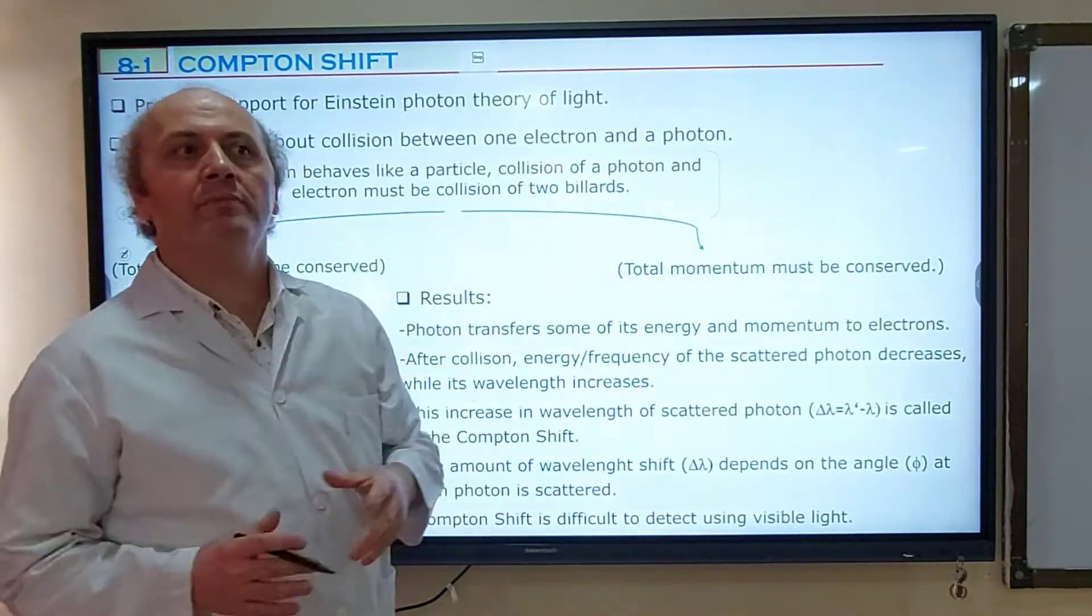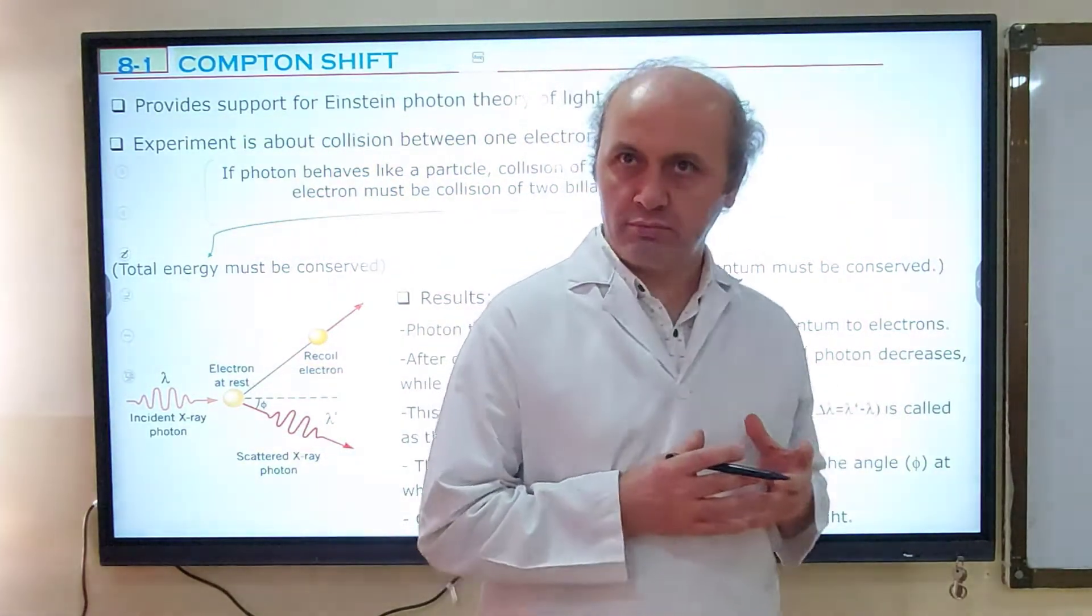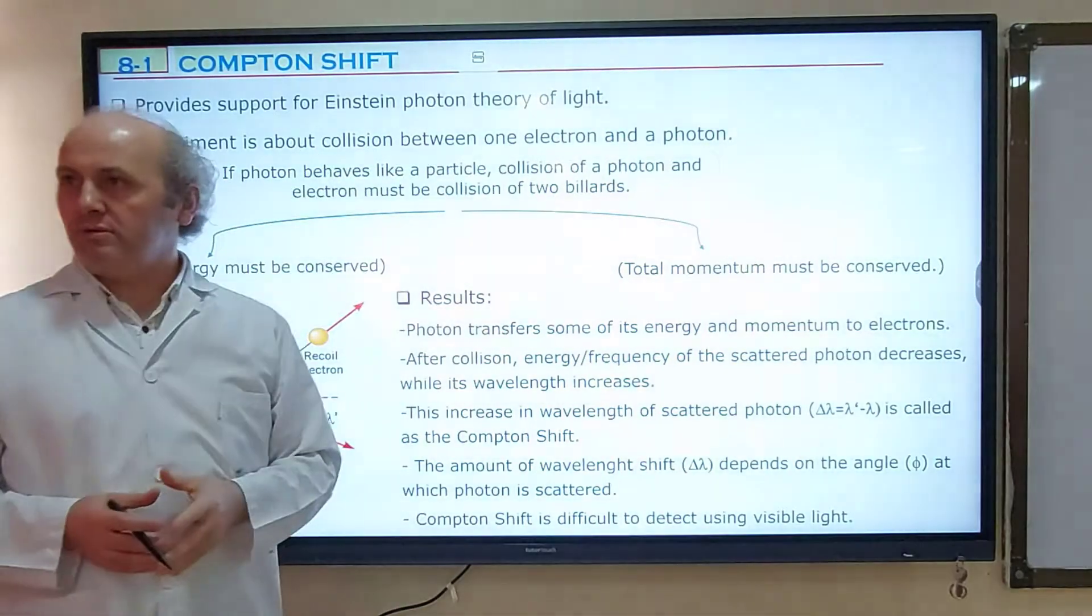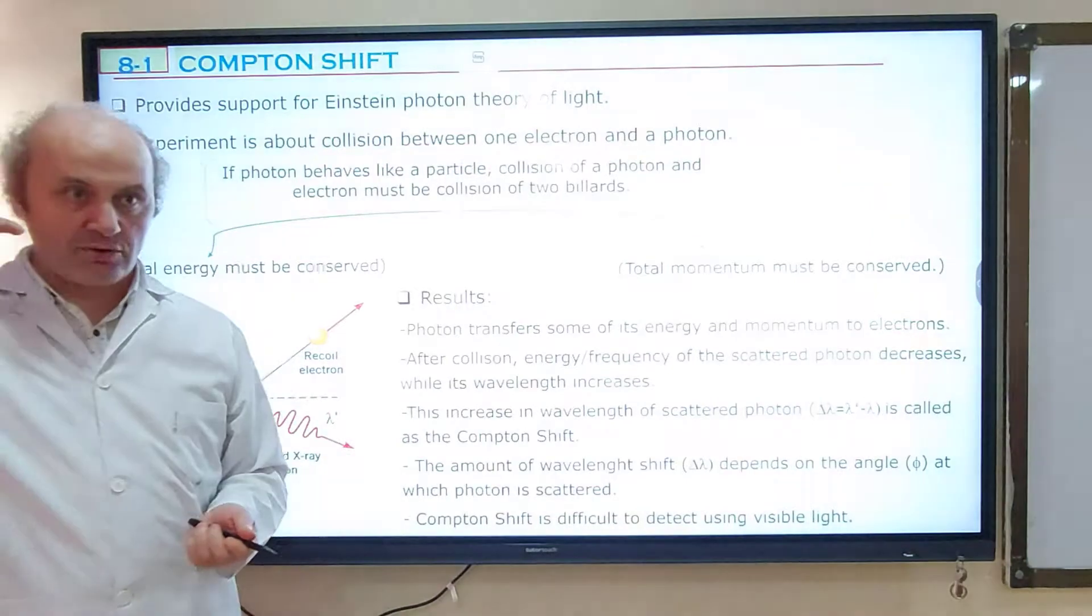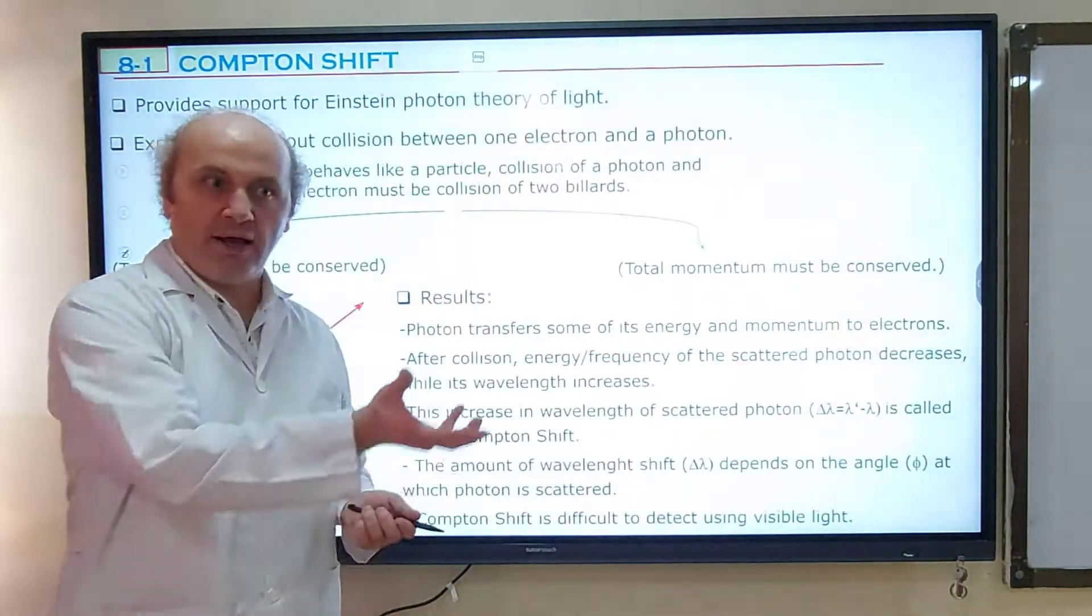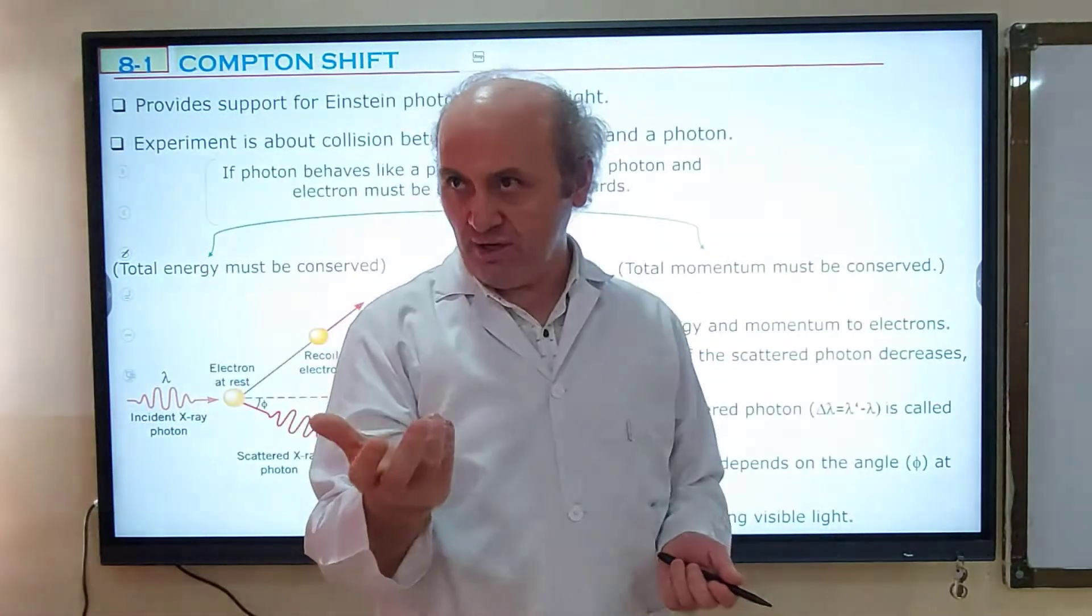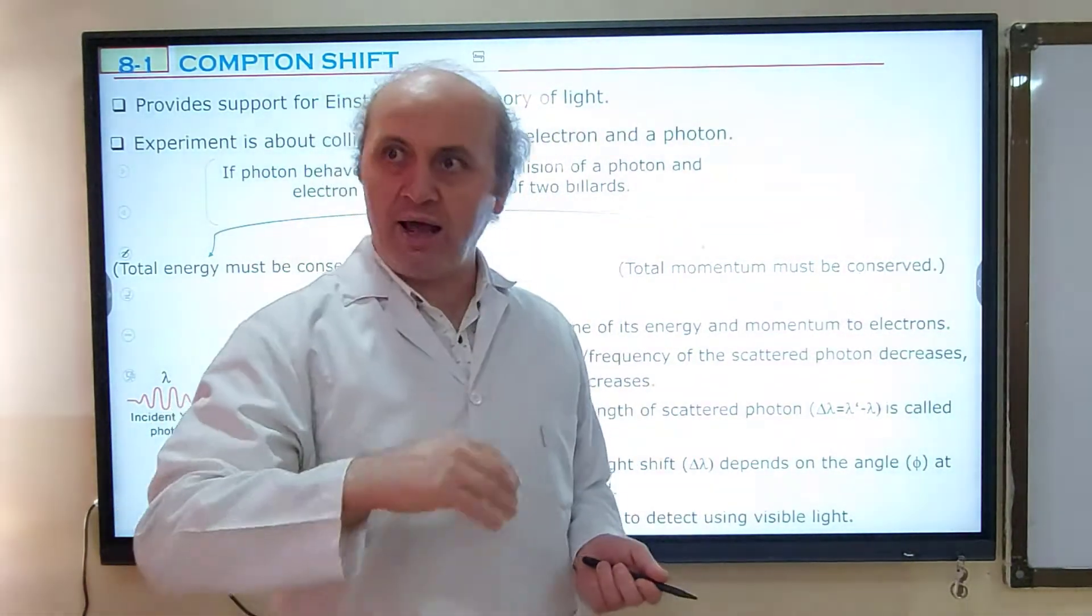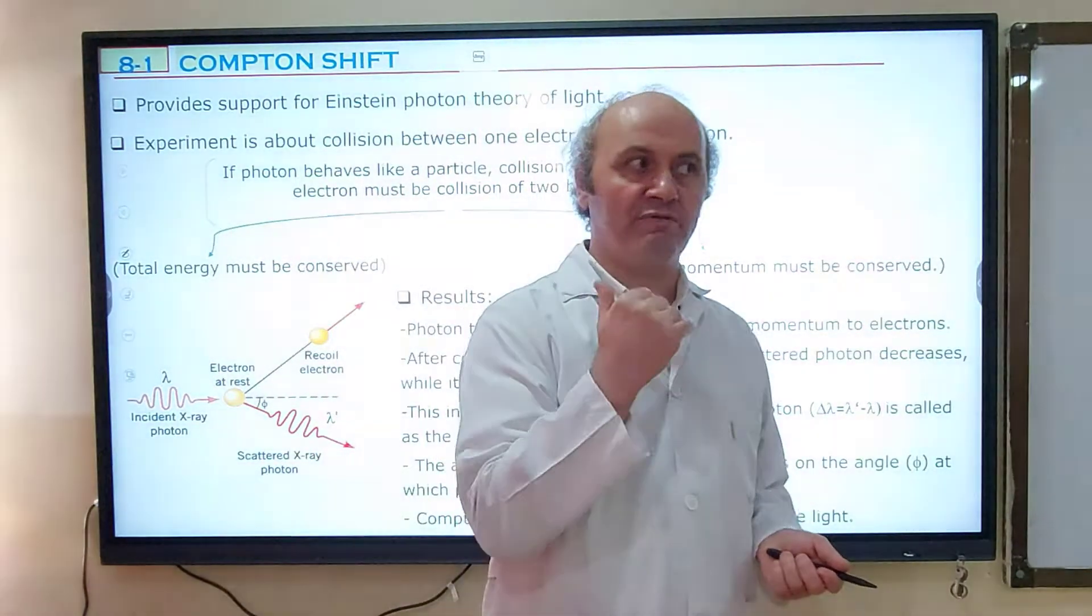It's about collision of a photon with an electron. The experiment is about the collision between one electron and a photon. We said in photoelectric effect, an electron is going and colliding a photon and removing it. If the photoelectron has enough energy, which must be minimum work function of that metal, and if energy of the photon is equal to work function of the metal, you will make the electron free.